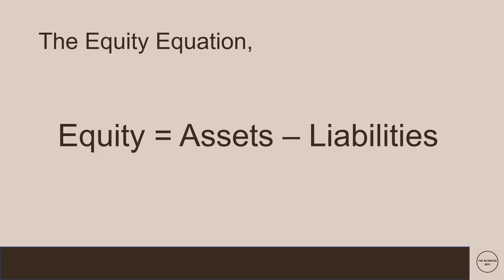So the equity equation — let's make this make sense. Equity is equal to assets, take away liabilities. This is the same as the definition at the start where we said assets with liabilities attached to them. The equation to work out equity is: Equity = Assets − Liabilities.